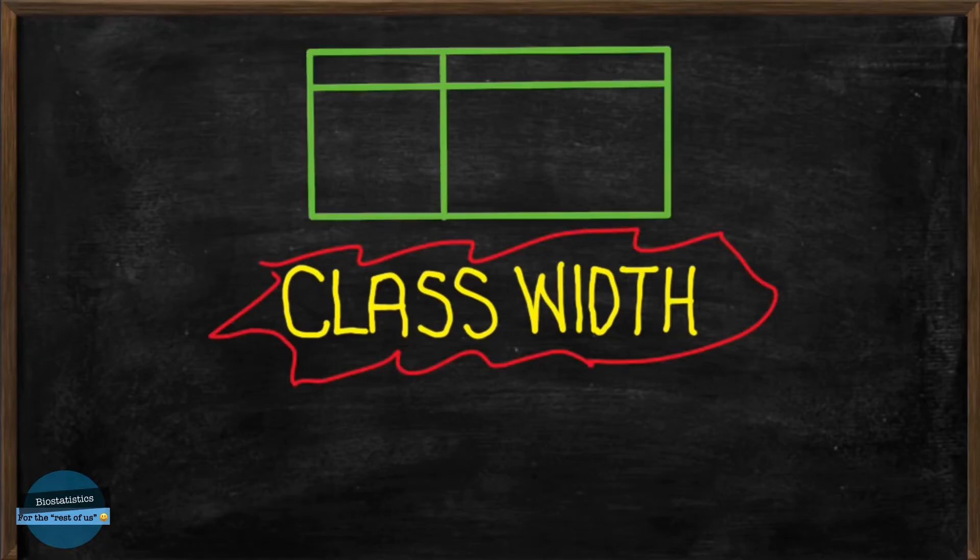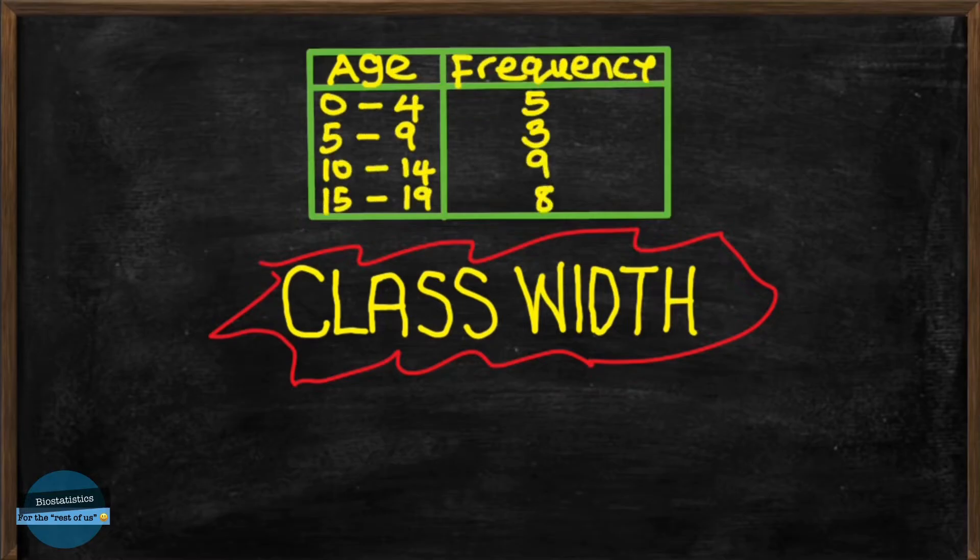Now, looking at this group data of the ages of patients admitted to a hospital, we can clearly see that there are four groups or four classes.